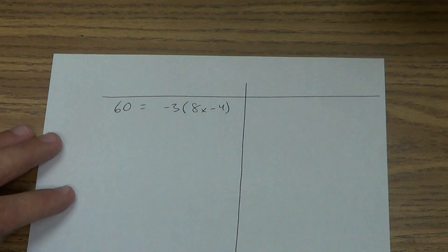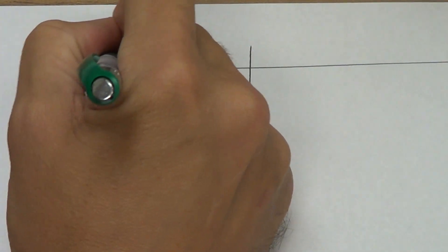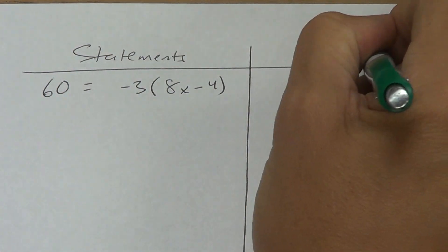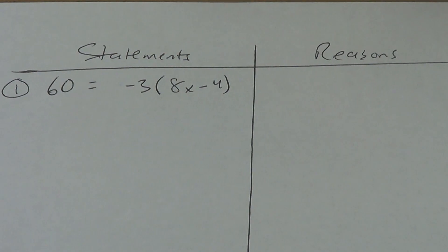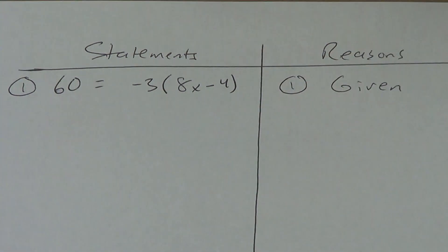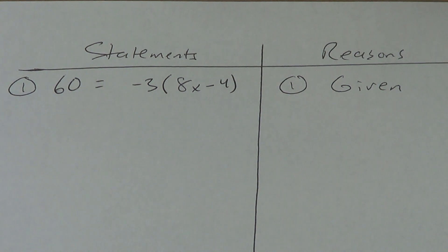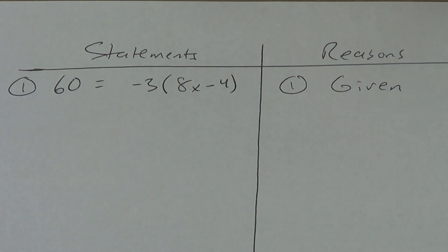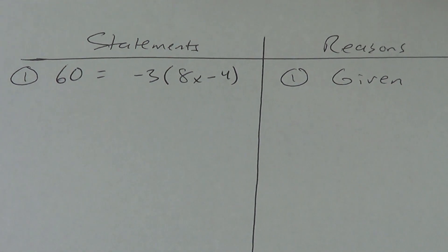Third one — you're going to do this one on your own. Statements right here, reasons over here. This is statement number one, and reason number one is 'given.' Pause it, copy it down, and try this one on your own. When you're done, watch the video and see if you did the steps the same way. If you didn't, you probably did it wrong. Make sure you correct your notes — don't leave them wrong or blank.